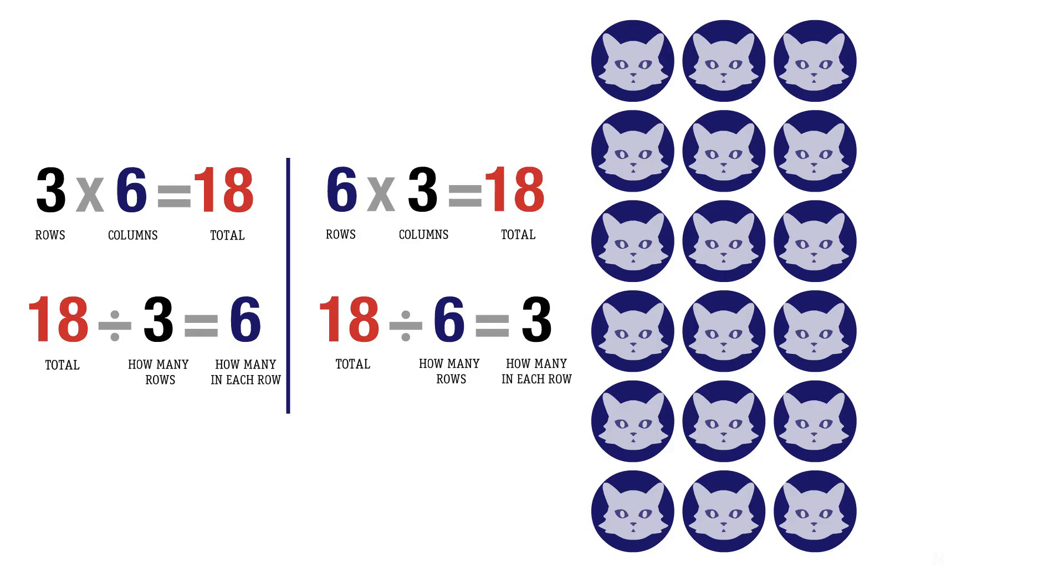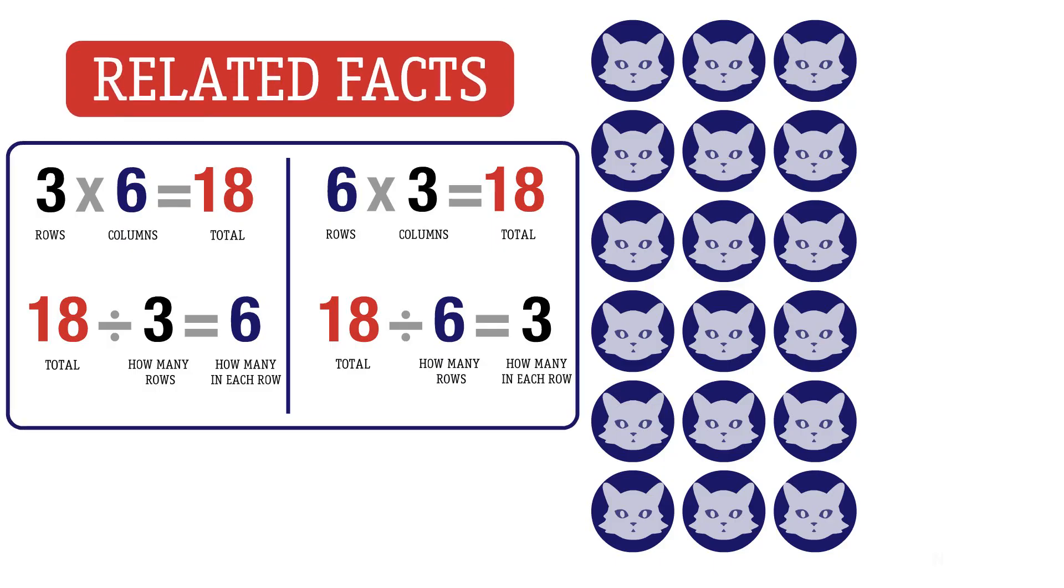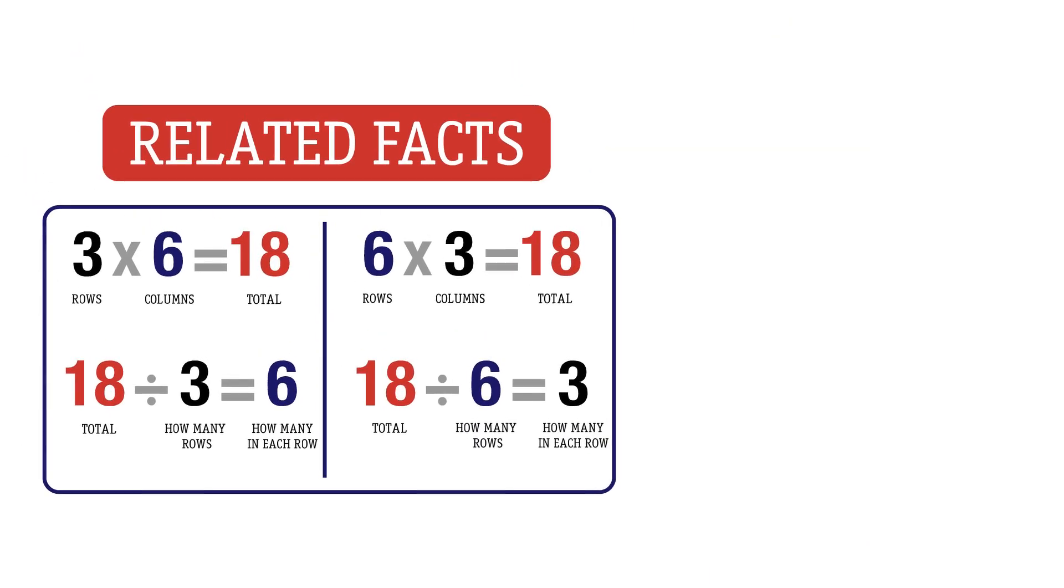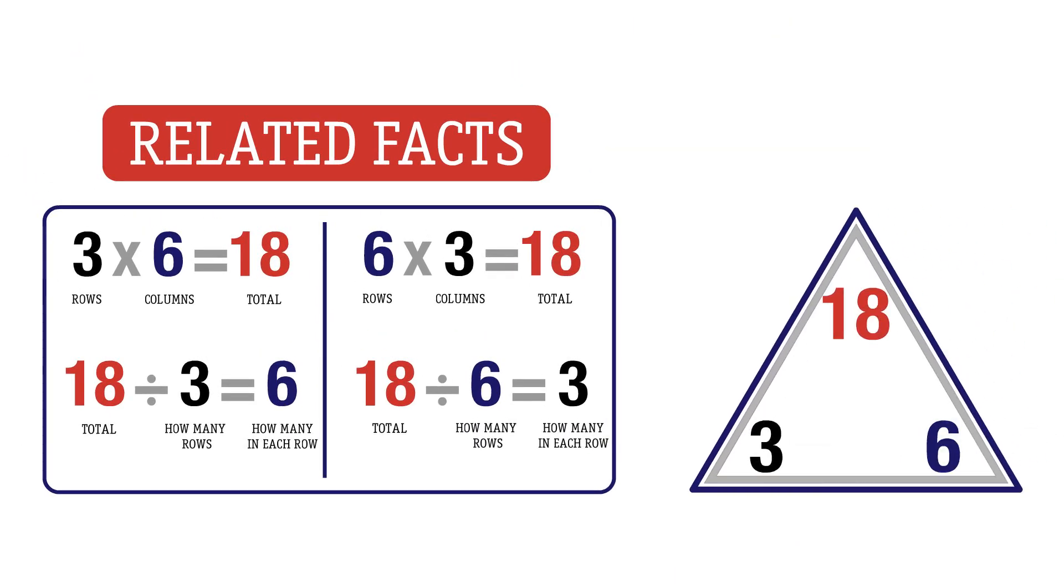These four facts, two multiplication and two division, are related. We can use triangles to show these related facts. We put the total number at the top and the two factors on the bottom.